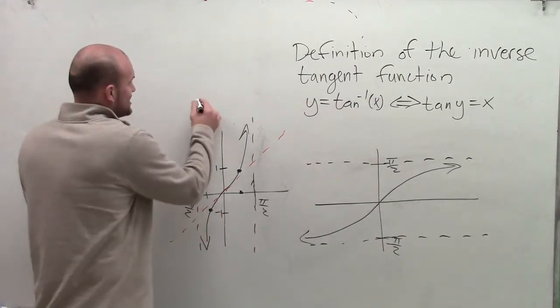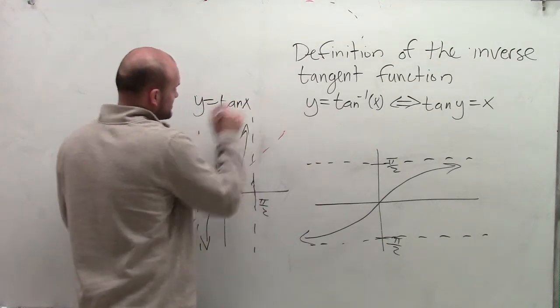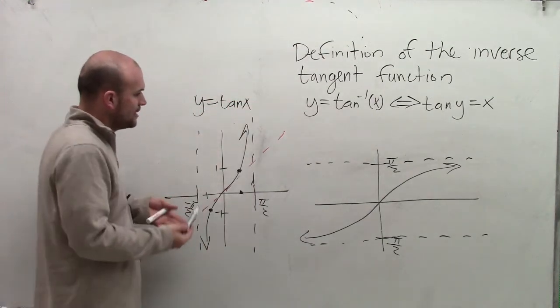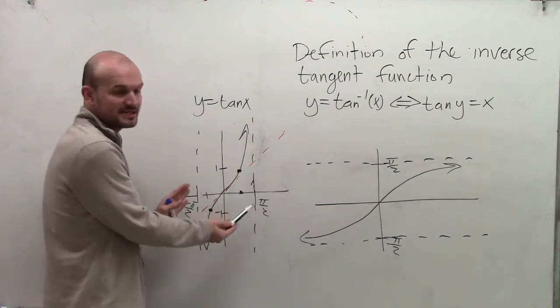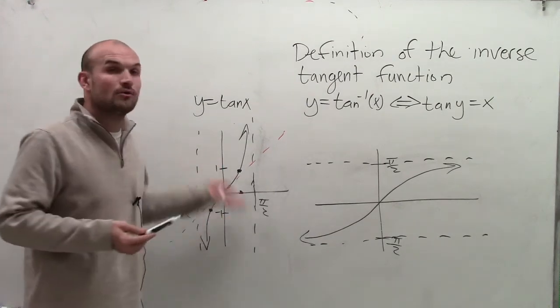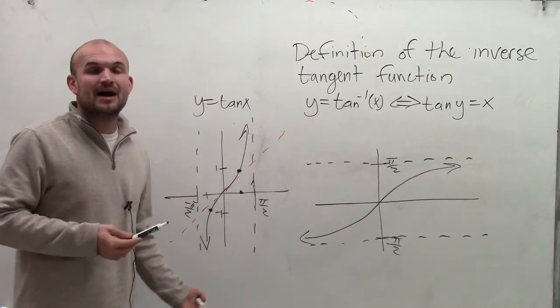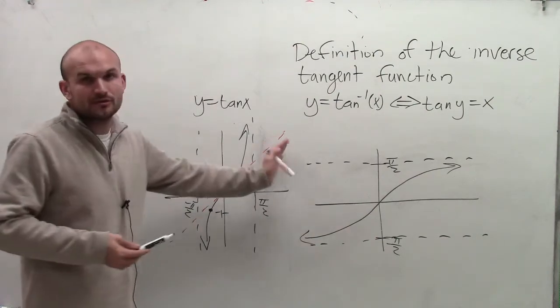When looking at the original tangent function, y equals tangent of x, you can see that the restrictions on their domain occur at every single one of our asymptotes. And there's no restrictions on our range as our graph goes infinitely in the positive and negative direction and continually repeats.